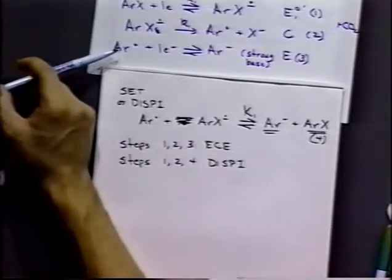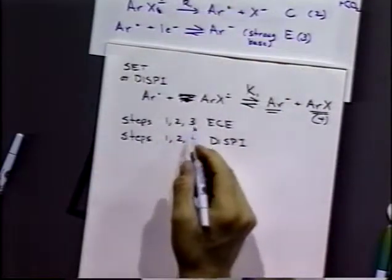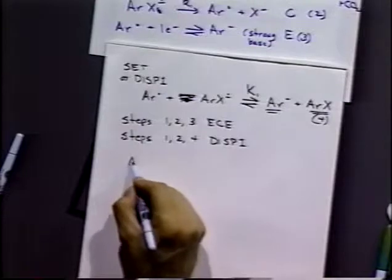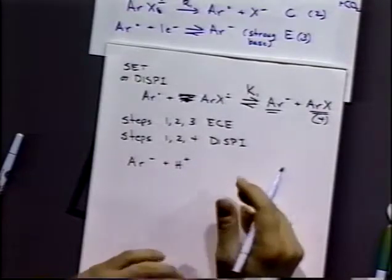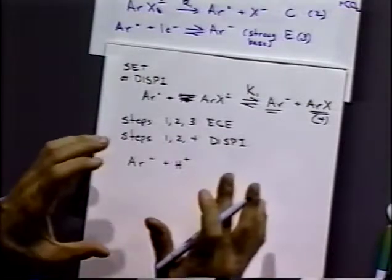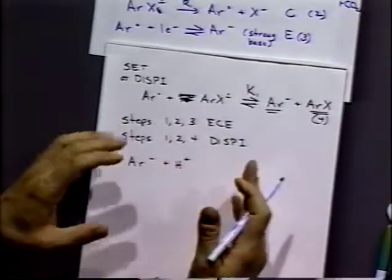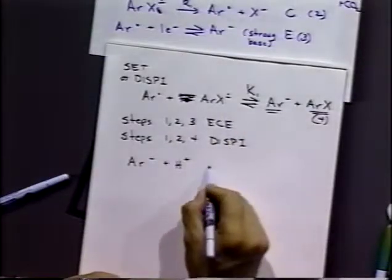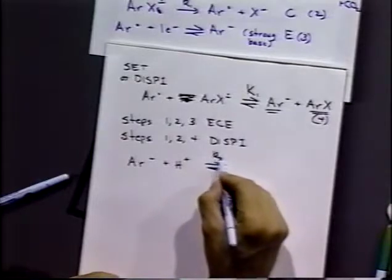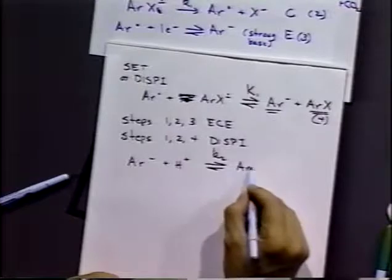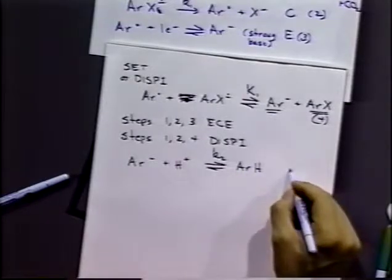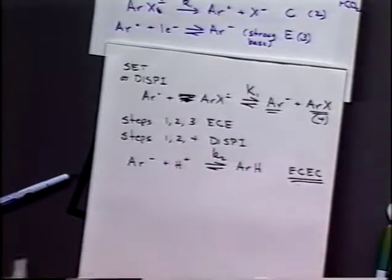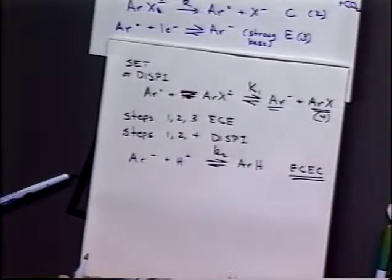It turns out that this particular case is involved in a second, another step. Because Ar minus is a strong base, it's likely to react with any source of proton whatsoever. And even very well prepared solvents like acetonitrile will always have a small amount of protons in there from water, which you just, really it's impossible to remove. So what will happen is that the Ar minus plus H plus will react with another electron, another chemical step to form ArH. So we'll end up with benzophenone as our final product in this particular case because this will react with traces of hydrogen ion in solution. So this is actually an ECEC reaction. And that's pretty common actually, this sort of step.